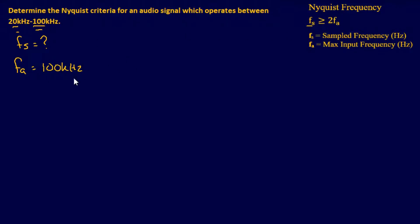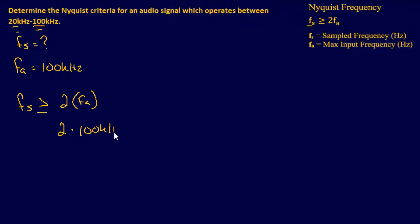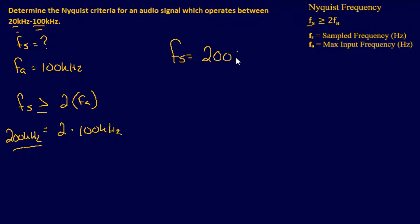Using the formula, f of s is greater than or equal to 2 times f of a, which in this case is 2 times 100 kilohertz, which equals 200 kilohertz. Our sampling frequency needs to be 200 kilohertz or greater just to meet that criteria.